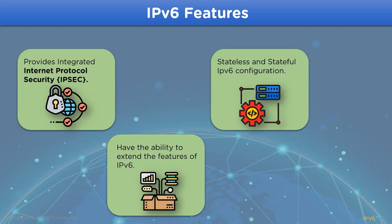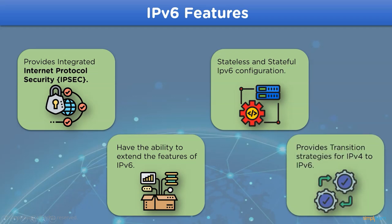It also allows address configuration through Stateful, which uses a DHCP server for network settings, and Stateless, which applies auto-configuration settings. IPv6 addresses also allow some methods to convert IPv4 addresses to IPv6 addresses, according to the requirement of the host or the network.